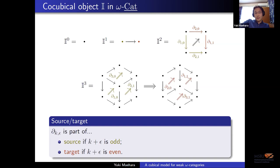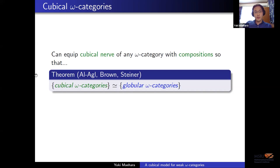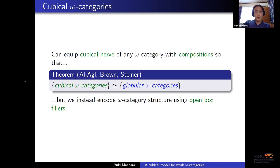From this co-cubical object, we can take the cubical nerve of any omega category by just mapping out of I. One thing you can do is that gives you a cubical set, and then you can equip these cubical nerves with composition operations — cubical composition operations — so that you get an equivalence between cubical omega categories with connections and globular omega categories in the strict case. This is what Brandon told us about.